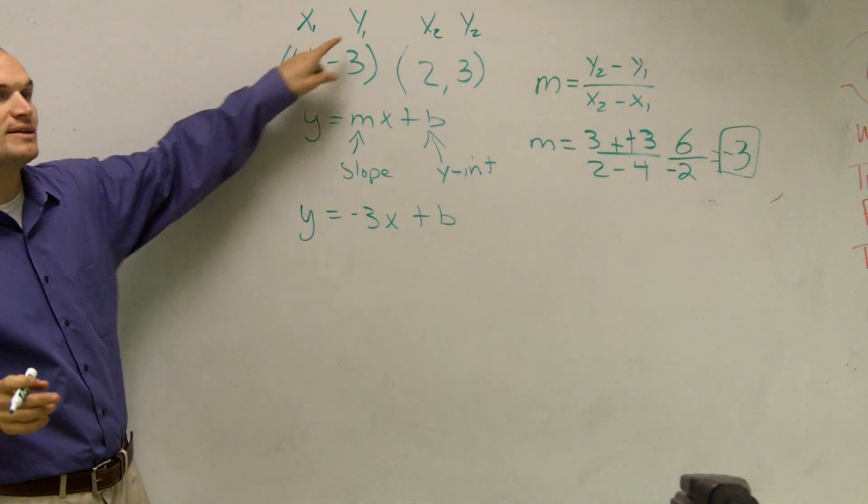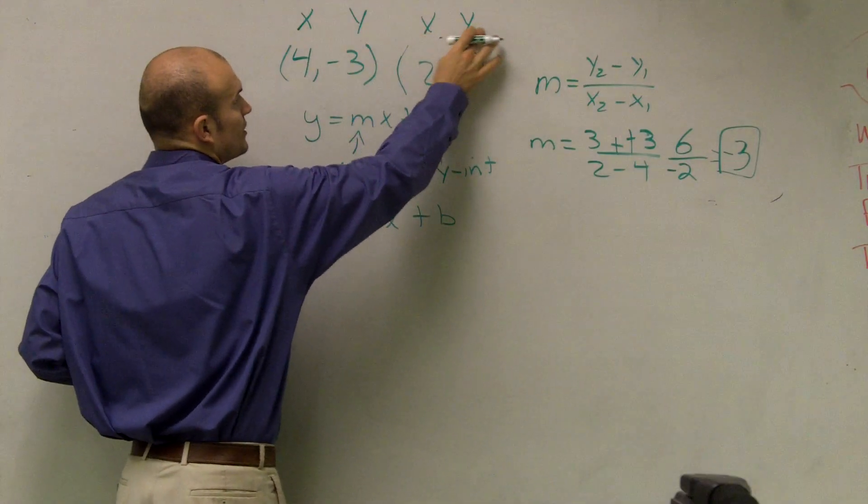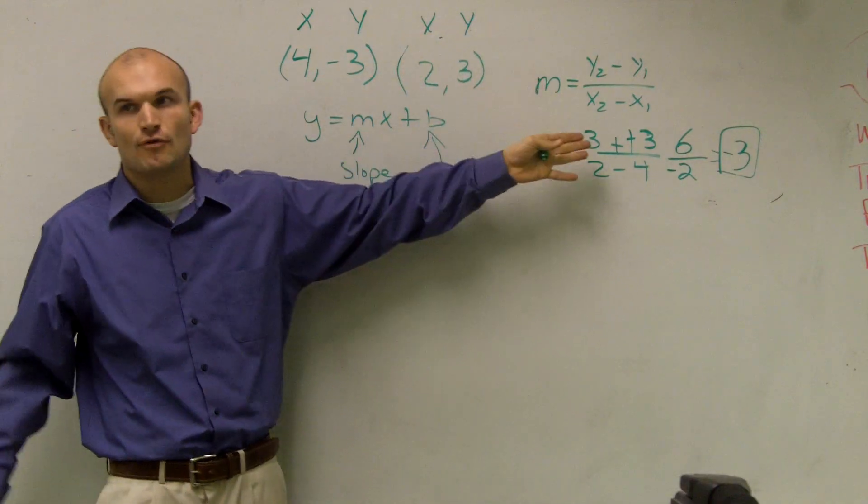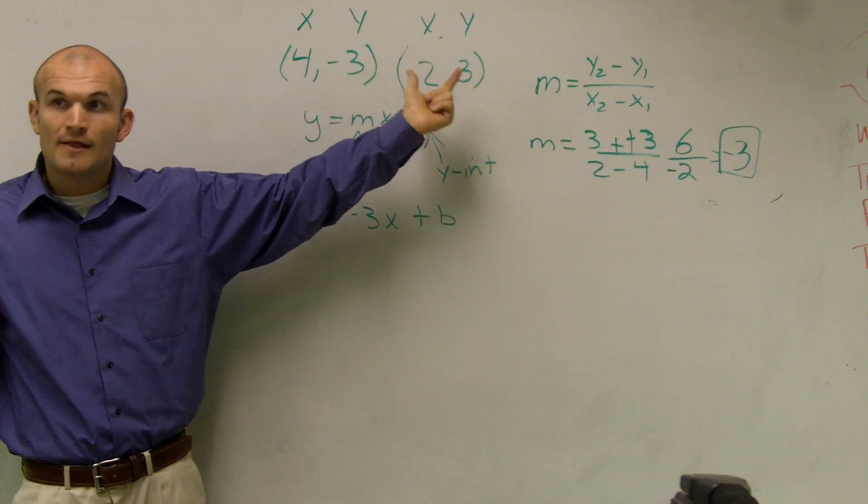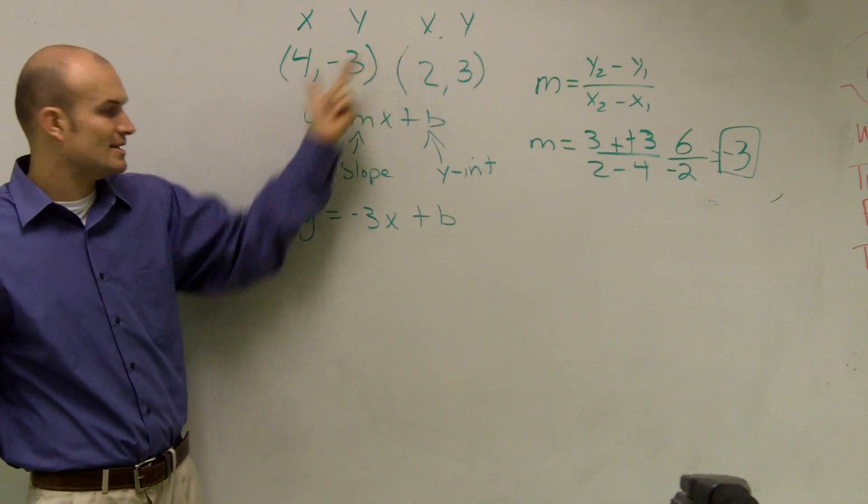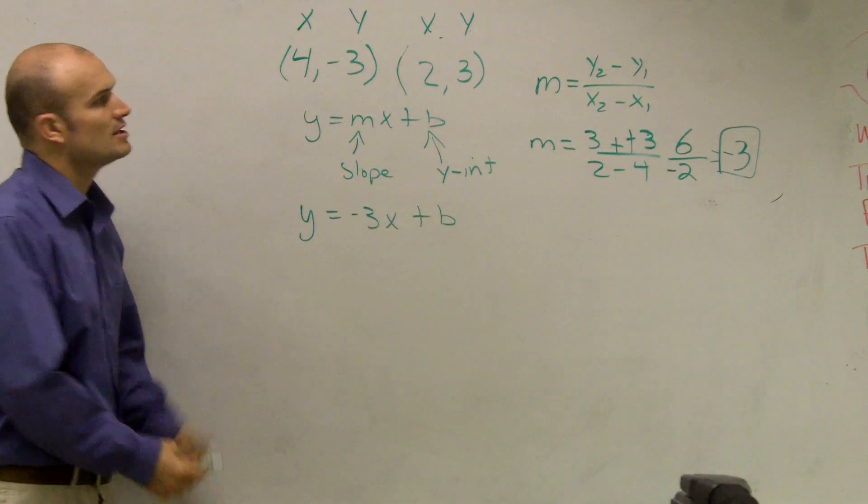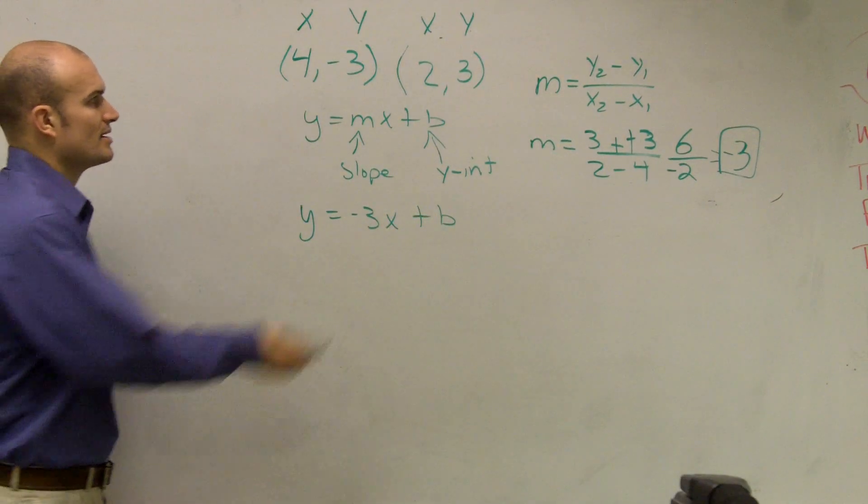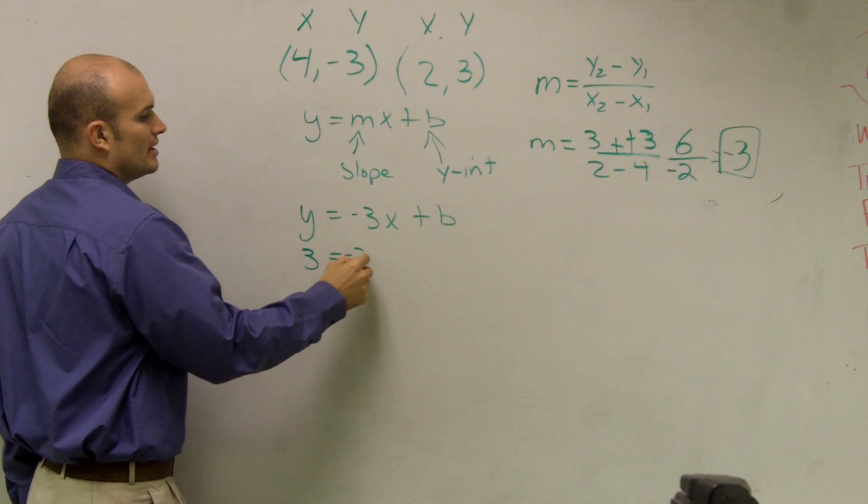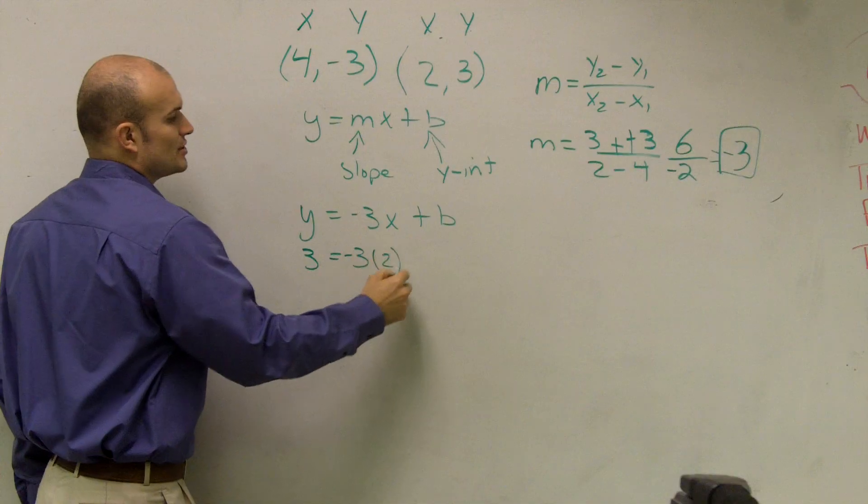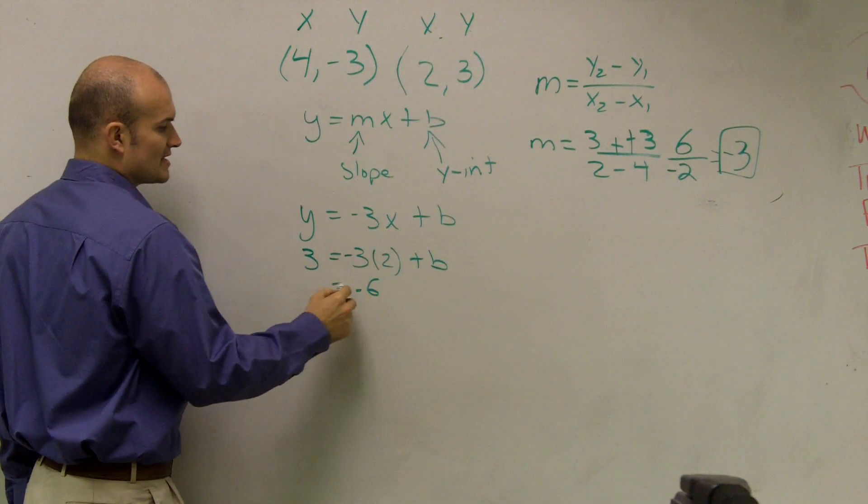Remember when I wrote these as x's and y's? Forget the 1's and 2's - we only used those for the formula. Each point represents a point on the line, so I can plug them in for x and y to find the y-intercept. Let's pick the second point. So 3 equals negative 3 times 2 plus b. Negative 3 times 2 is negative 6.